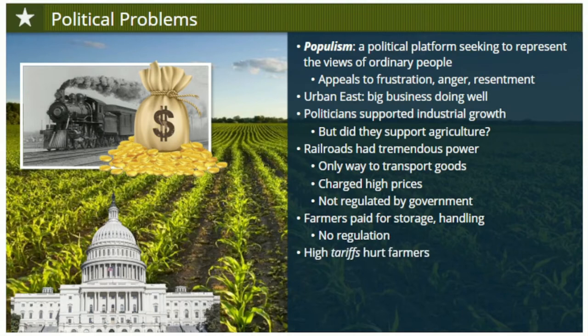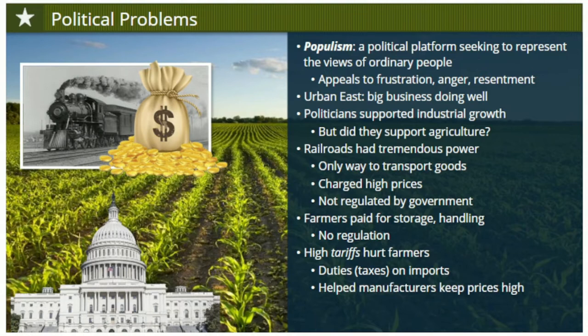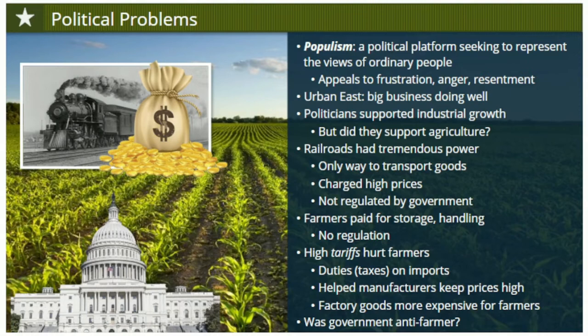The high tariffs passed by Congress hurt farmers as well. Tariffs are duties or taxes charged on products imported into the U.S. from other nations. High tariffs meant high prices for foreign goods, protecting American manufacturers from foreign competition. But this didn't help farmers who exported their goods, and high tariffs made it more expensive for farmers to buy factory goods like plows or tools. All of this meant that farmers began to feel like their government was conspiring against them. The government was pro-business, not necessarily anti-farmer, but to hard-working Americans who couldn't seem to catch a break, it seemed like the political status quo needed to change.